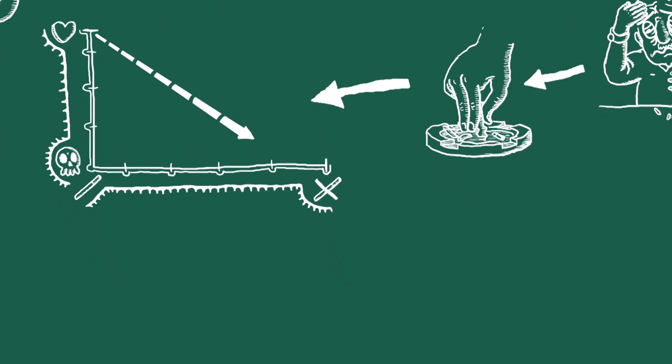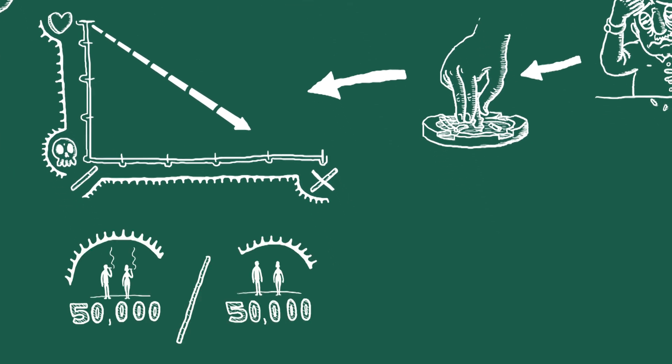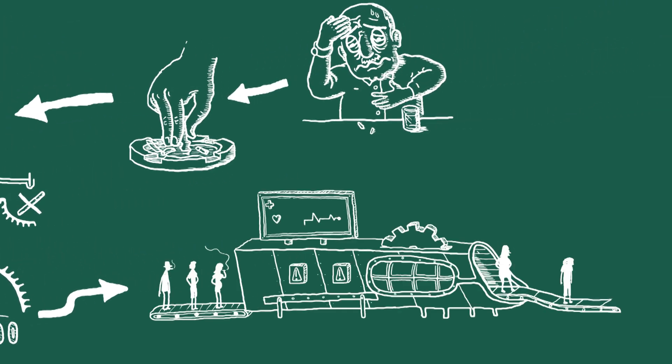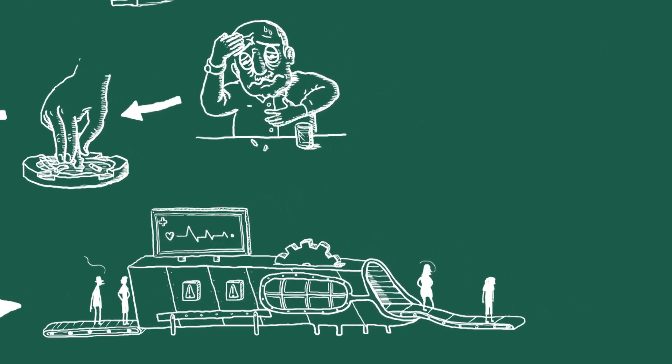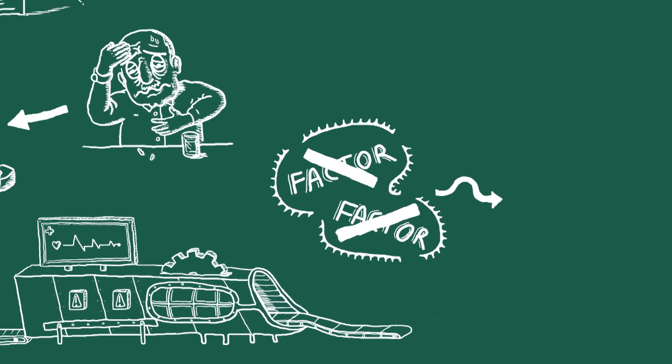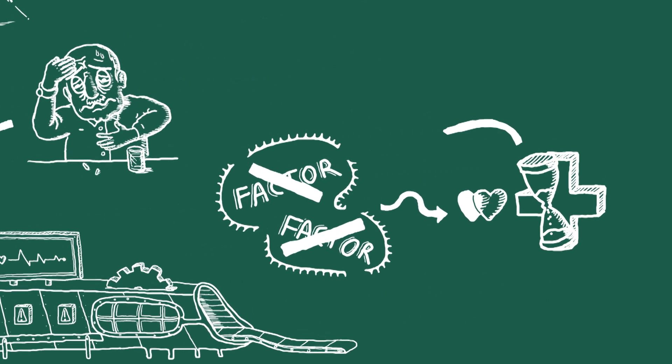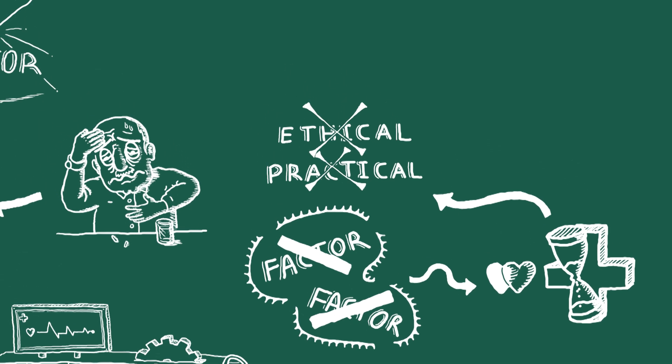We could randomly assign 50,000 people to smoke and 50,000 people to not smoke and follow them up to monitor their health. This removes the possibility that any other factor could be responsible for any differences we see in their long-term health. But this is neither ethical nor practical.